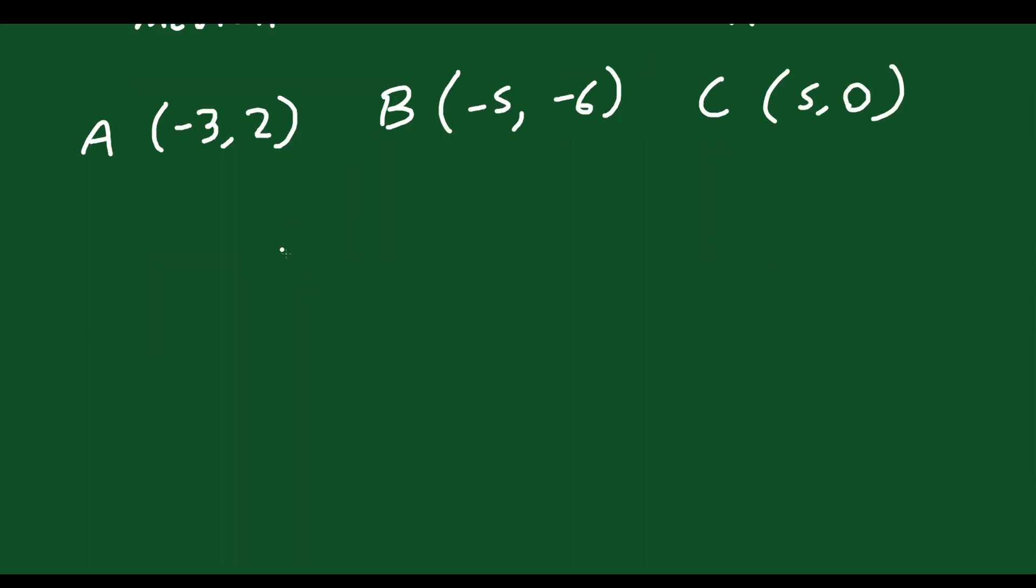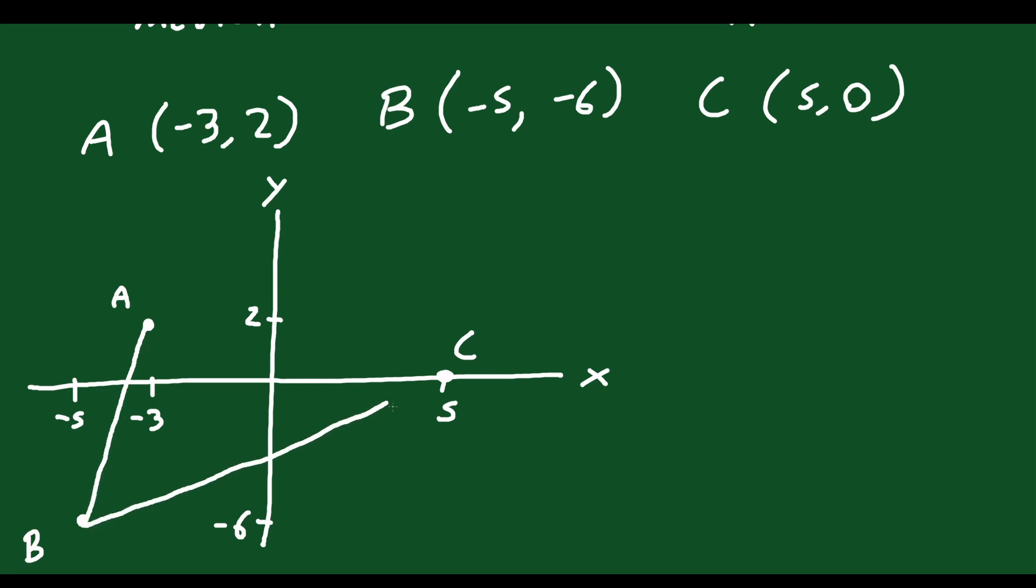If they give you three points, we're able to plot those points. So let's just do that, just to help us visualize what's happening. So point A is at (-3, 2), put it right there. Point B is at (-5, -6), so we go negative 5 down to negative 6. And then point C is (5, 0), so it's going to be over here at 5, 0. And you can connect those dots together, and what we have here is a triangle.